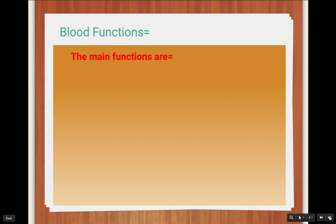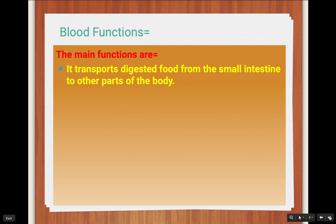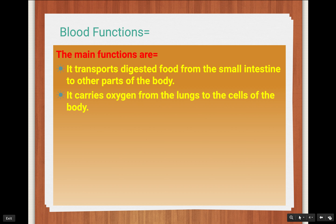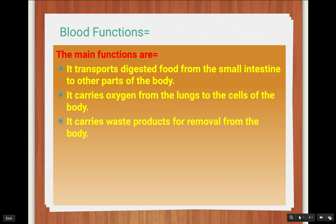What are the blood functions? The main functions are: blood helps when we eat food — it helps digest the food and brings nutrition to the small intestine and then to other parts of the body. The second function is that blood helps in oxygen transportation from the lungs to the cells in different parts of the body. It also helps in removing waste products from our body.